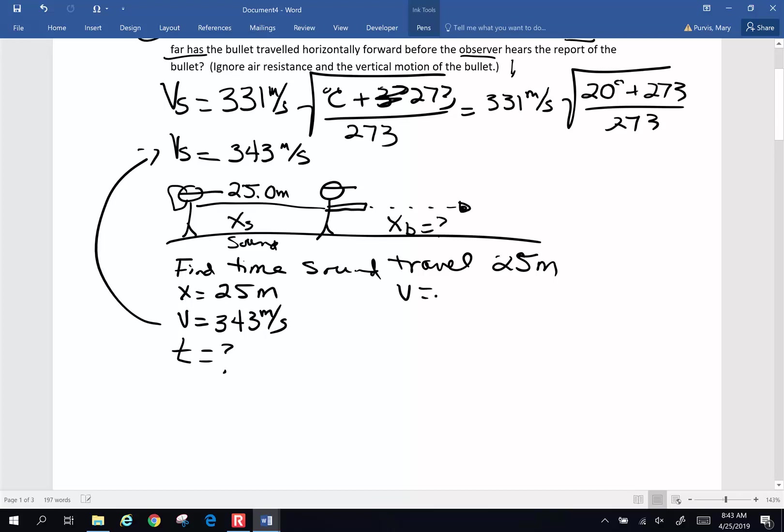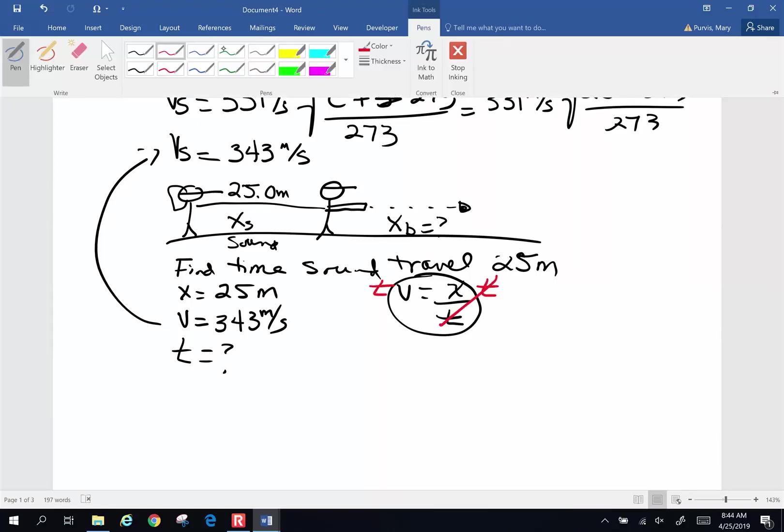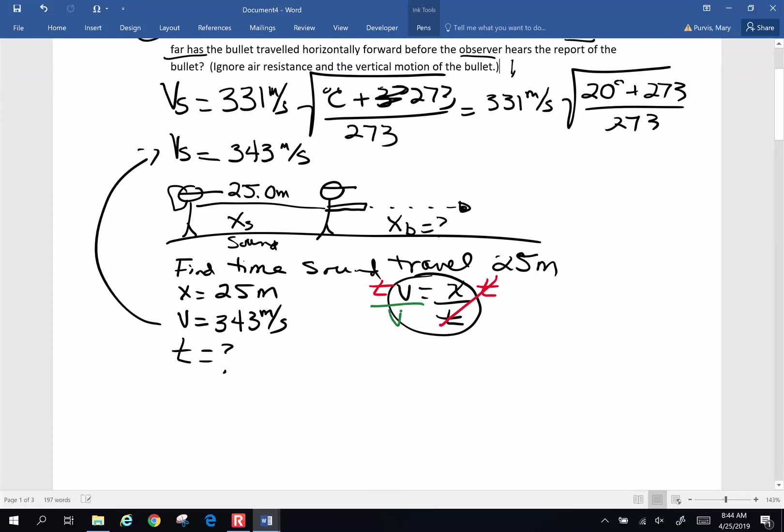We know velocity is displacement over time. Sound is going to travel at a constant velocity, so we can use this constant velocity equation. Do a little algebra. We're going to solve for time. Multiply both sides by t. That's going to cancel. Next thing I'm going to do is divide both sides by v. And I'm going to end up with time is x over v.